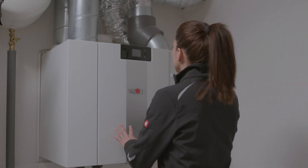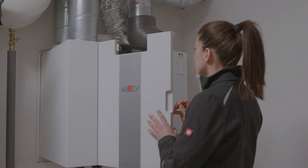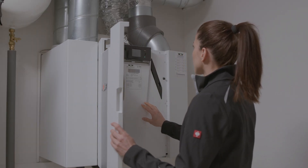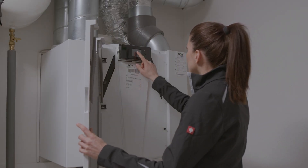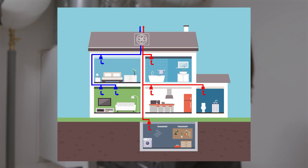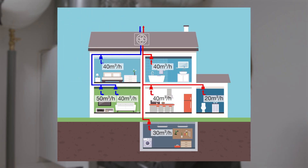A nominal output with total volume flow is defined for a ventilation system. The ventilation plan shows how this is distributed to the supply and exhaust air outlets in the individual rooms. During commissioning, the outlets are set to the target volume flows.